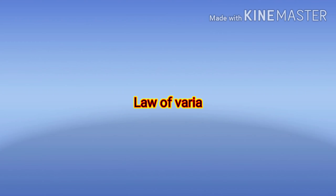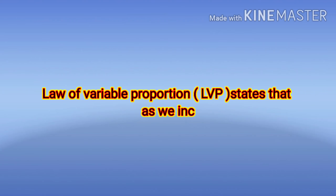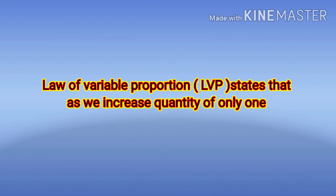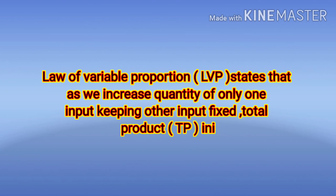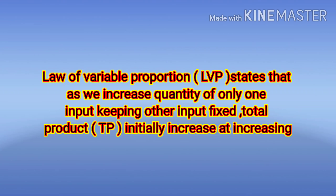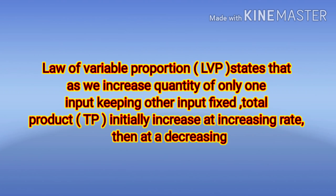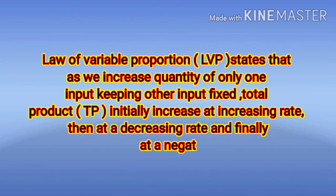The Law of Variable Proportions states that as we increase the quantity of only one input, keeping other inputs fixed, total product (TP) initially increases at an increasing rate, then at a decreasing rate, and finally at a negative rate.